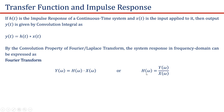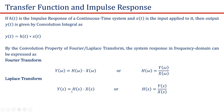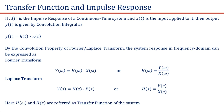This can be expressed as H(ω) is equal to Y(ω) divided by X(ω). Similarly, using the Laplace transform, Y(s) is also equal to H(s) multiplied by X(s), or the transfer function H(s) is equal to Y(s) divided by X(s). Here H(ω) and H(s) are referred to as transfer functions expressed using the Fourier transform and Laplace transform respectively.